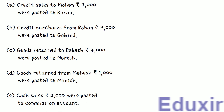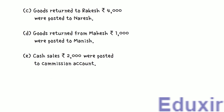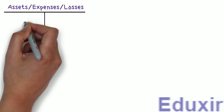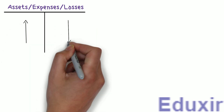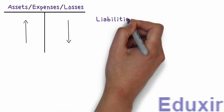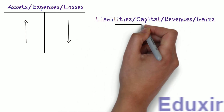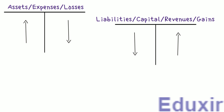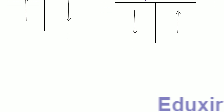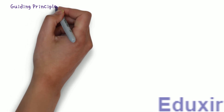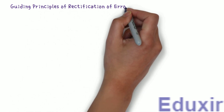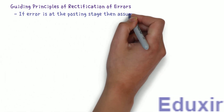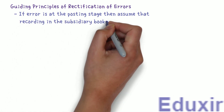Before we proceed with the analysis of these errors, let's first do a small recap. In case of assets, expenses, or losses, any increase in any of these should be debited, and any decrease should be credited. To rectify the errors in this problem, we need to recall a few of the guiding principles of Rectification of Errors. One of the guiding principles is: if the error is at the posting stage, then assume that recording in the subsidiary books has been correctly done.